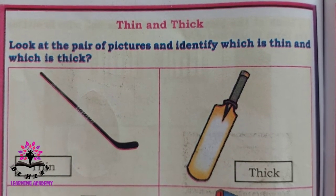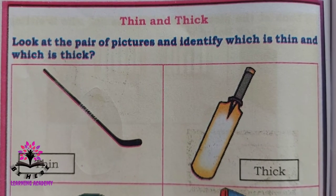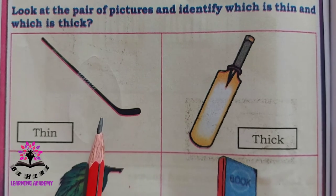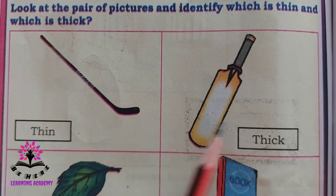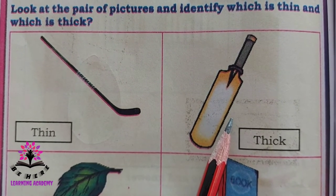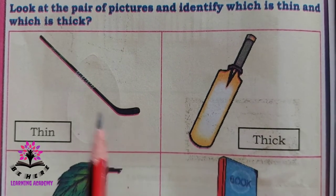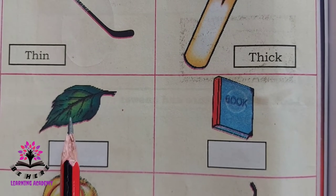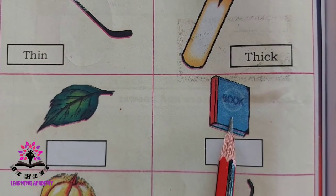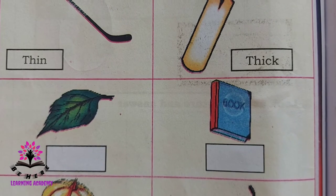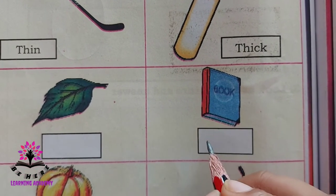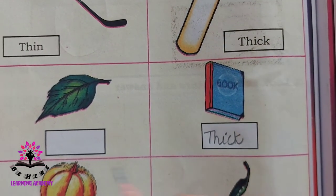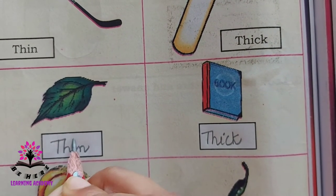Look at the pair of pictures and identify which is thin and which is thick. This example is already done — this is thick and this is thin. Let us move on to the next one. There is a leaf and a book. Which is thick? The book is thicker than the leaf, so the book is thick and the leaf is thin.